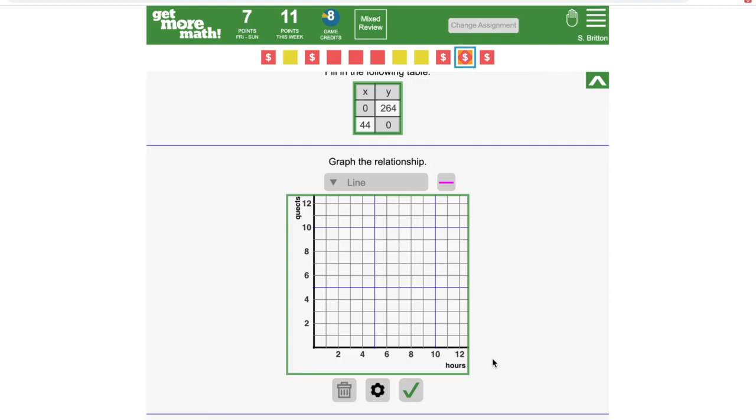Alright, now I just need to graph the points on my table: 0,264 and 44,0. But there's an issue. This graph only goes up to about 12 and a half in either direction. It's too small for me to graph these points.